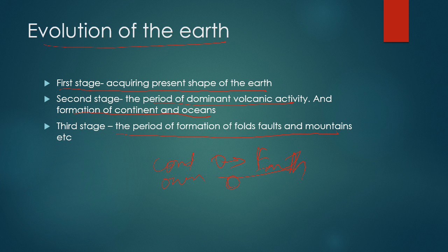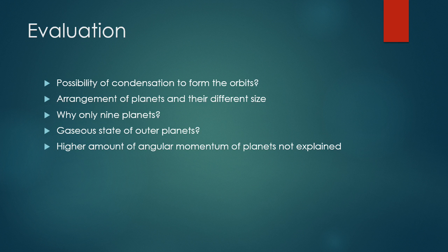Evaluation of this theory: How is it possible to explain the condensation to form orbits? The arrangement of planets and their different sizes wasn't explained—planets in the middle are large while those at the edges are small.